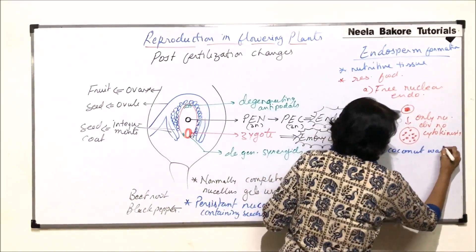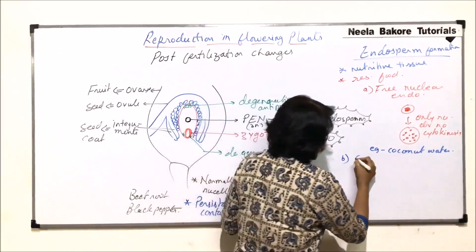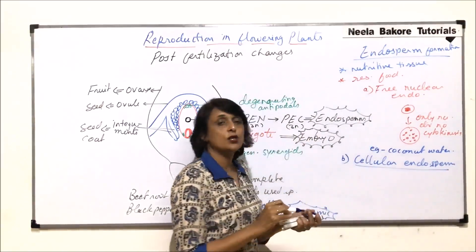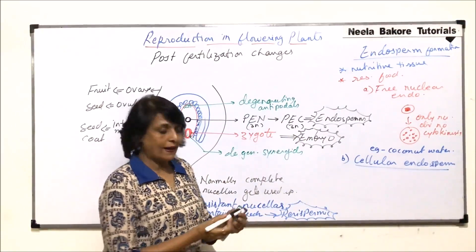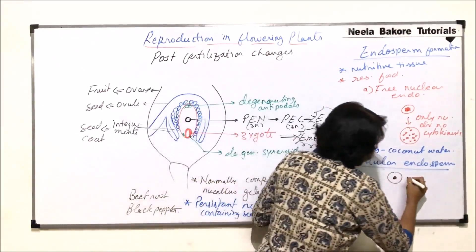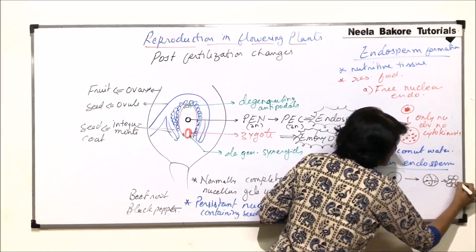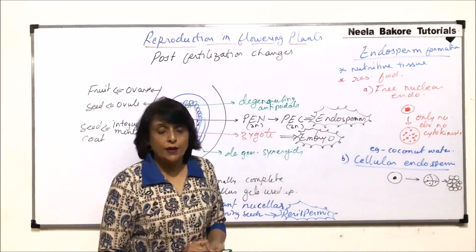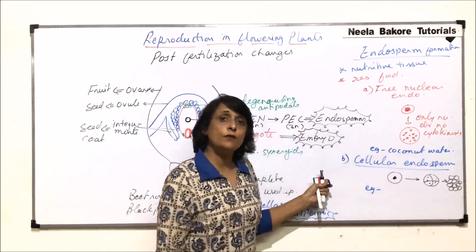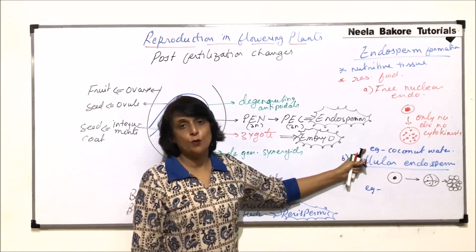The second type of endosperm is known as cellular endosperm. In cellular endosperm, the division is normal — after every karyokinesis there is cytokinesis. So the primary endosperm cell divides into two cells, then four cells, and ultimately a cellular mass is formed. All cells are triploid because the division is mitotic. The example here is also coconut — specifically the white edible part of coconut, which is cellular endosperm.